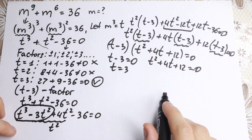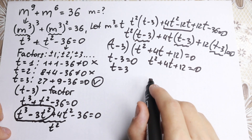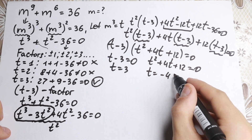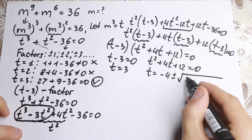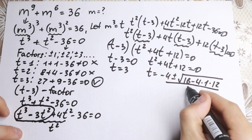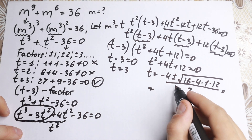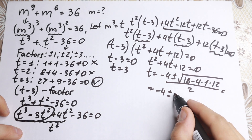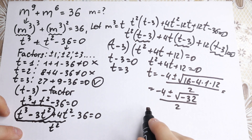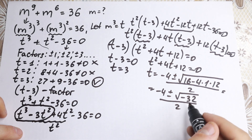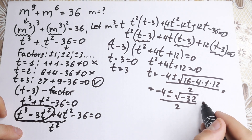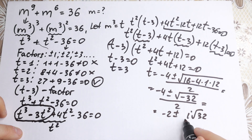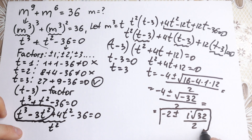From the quadratic t² + 4t + 12 = 0, using the quadratic formula: t = (−4 ± √(16 − 48)) / 2 = (−4 ± √(−32)) / 2. Our discriminant is negative, so these roots involve the imaginary unit i, giving complex roots: t = −2 ± i√(32)/2.